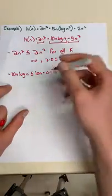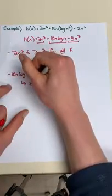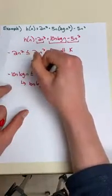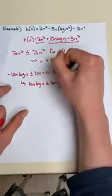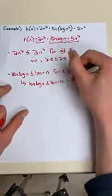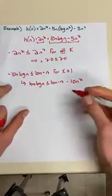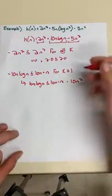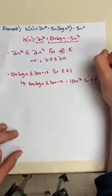We can actually further simplify this down. We can say that 10n log(n) grows no faster than 10n times n, which grows no faster than 10n². And this is also for k greater than or equal to 1.